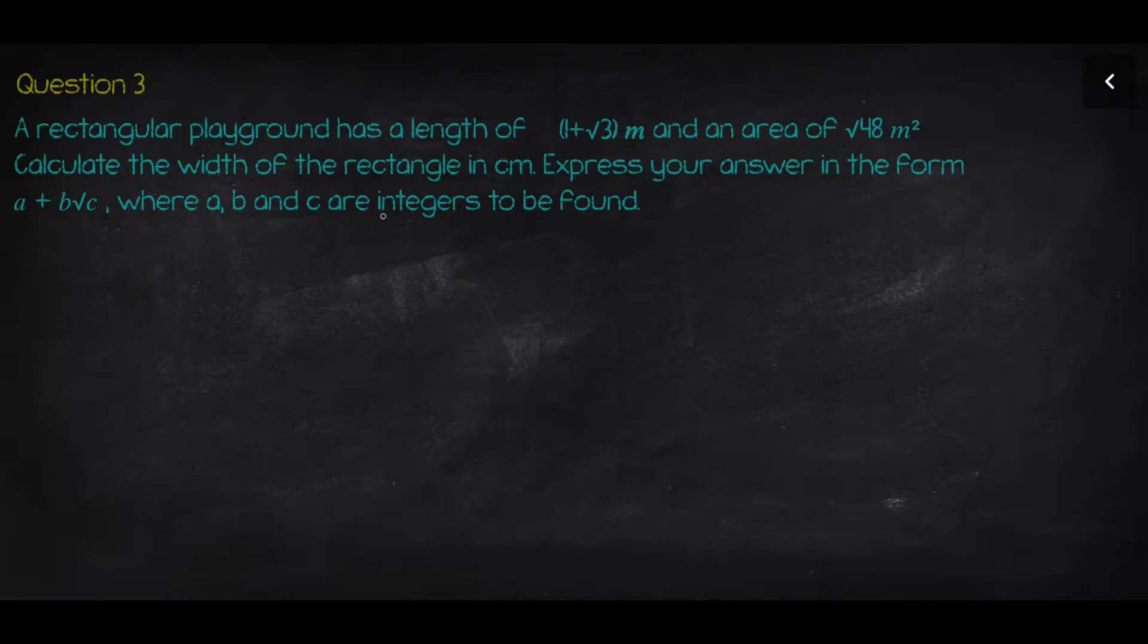We have a rectangular playground with a length of (1+√3) meters and an area of √48 meters squared. You need to calculate the width of the rectangle in centimeters and express your answer in the form a+b√c, where a, b, and c are integers to be found.